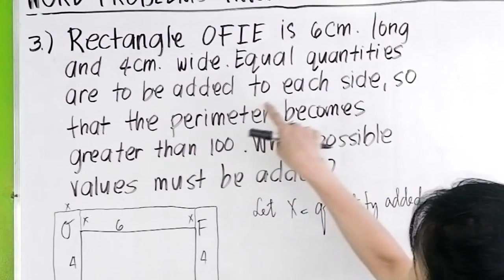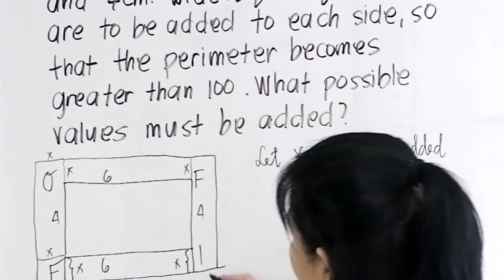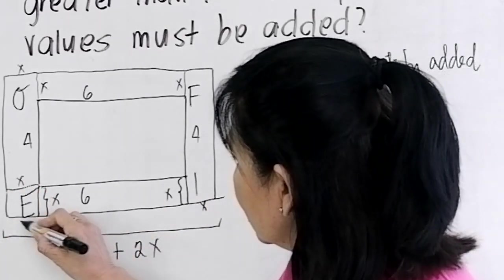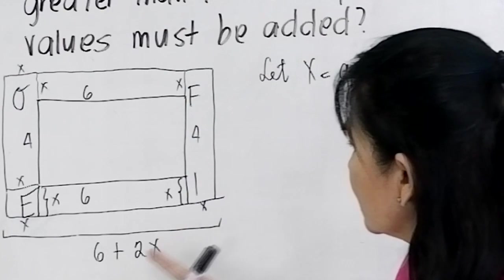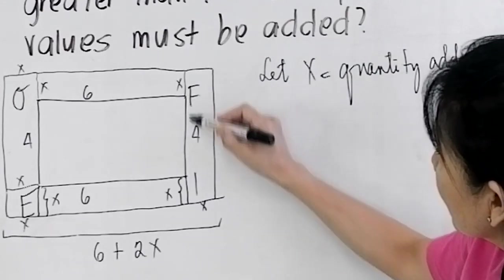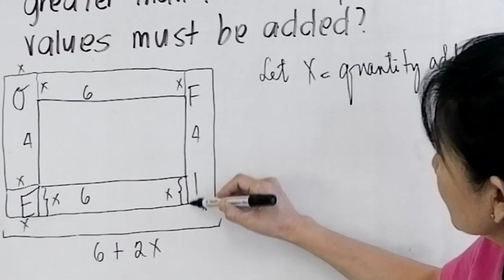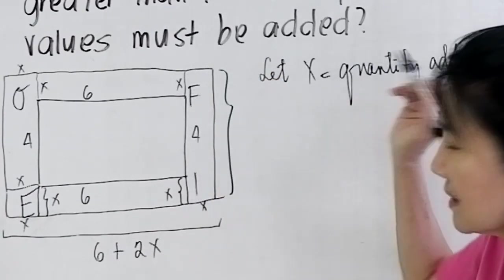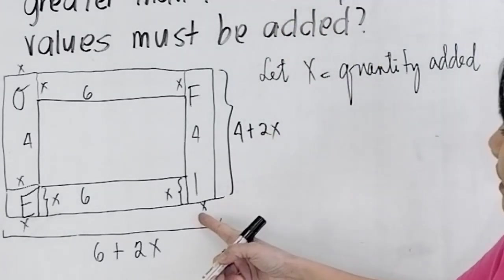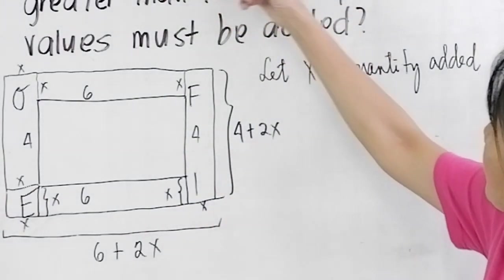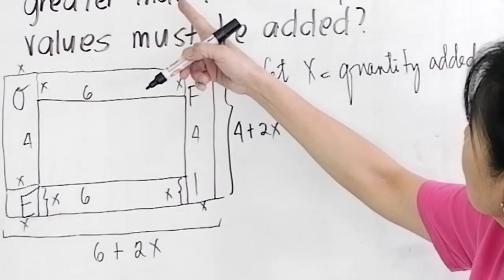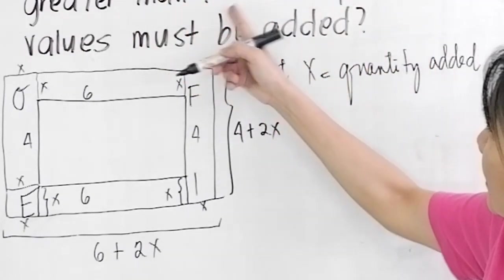Equal quantities are to be added to each side, so you add an x here. From the original 6, you added an x here and another x there, so the whole thing, the new length is now 6 plus 2x, x plus x is 2x. Now on this side you have the original 4, you added x and another x, so this whole thing becomes 4 plus 2x. Now once you add an equal quantity x to each side, so to the right and to the left side, up and down side.